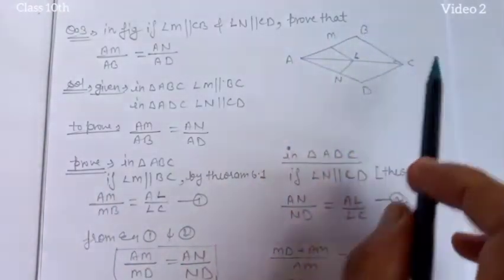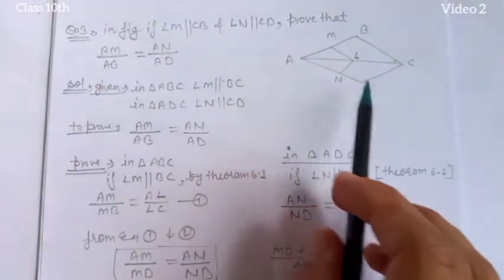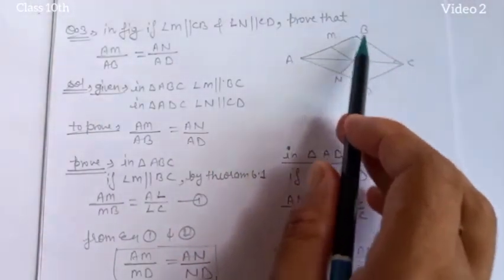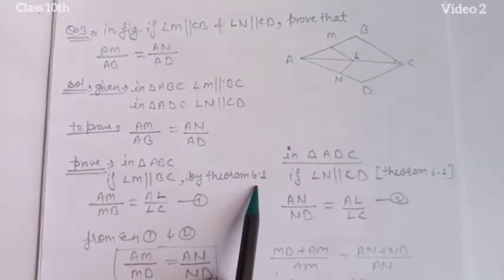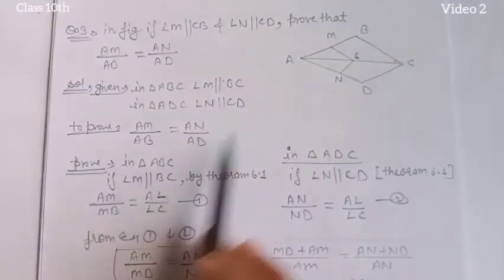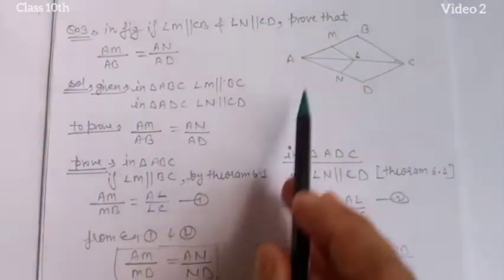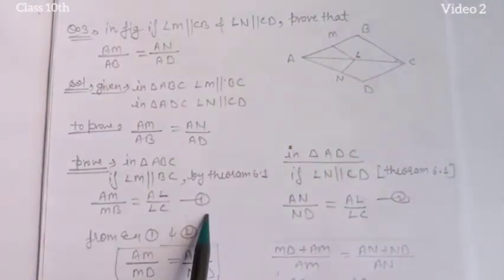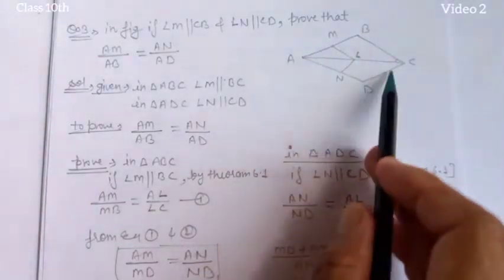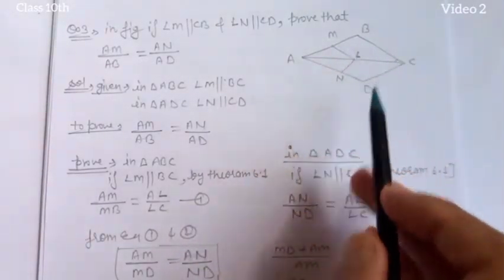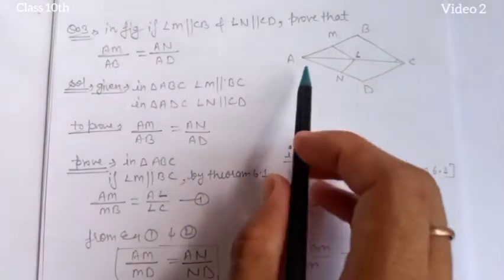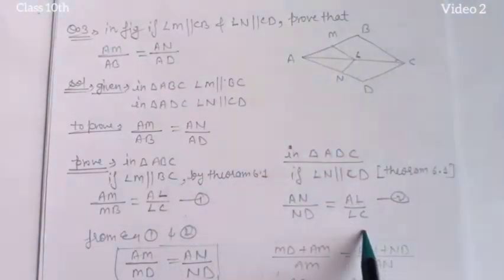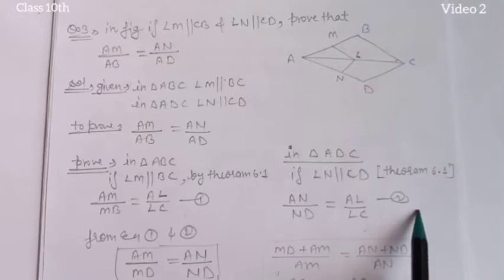We need to prove AM upon AB equals AN upon AD. In triangle ABC, since ML is parallel to BC, by theorem 6.1, we can write the ratio AM upon MB equals AL upon LC — mark this as equation 1. Similarly, in triangle ADC, since LN is parallel to DC, we can write AN upon ND equals AL upon LC — mark this as equation 2.